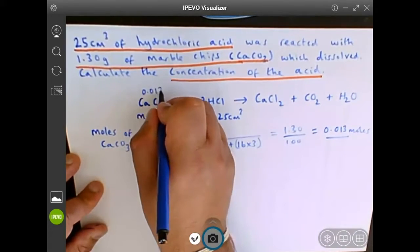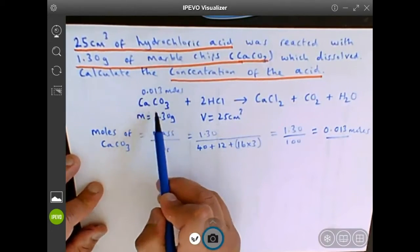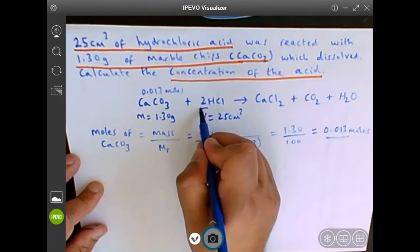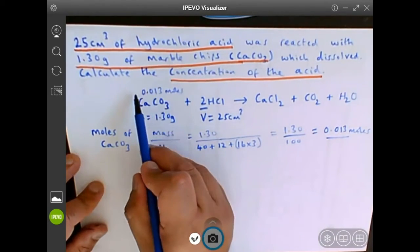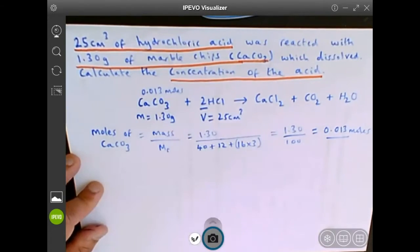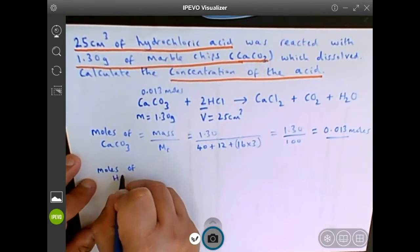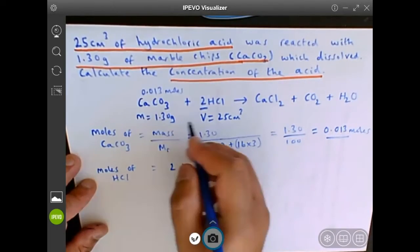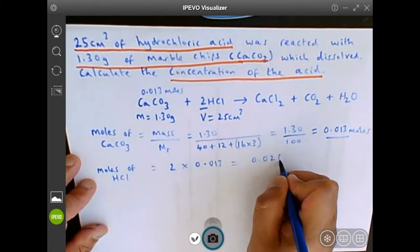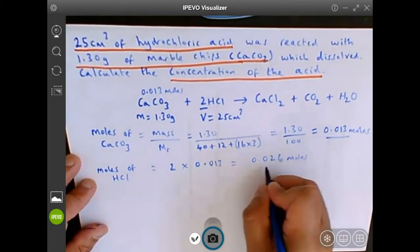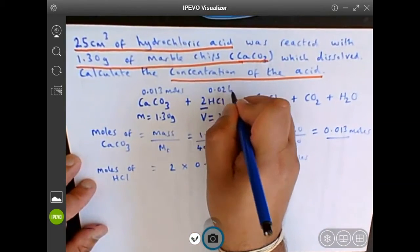From the equation you can see that one mole of calcium carbonate CaCO3 reacts with 2 moles of HCl. So I'll need twice as many moles to react completely with the HCl. The moles of HCl is twice the moles of calcium carbonate, so that's 2 times 0.013, which gives you 0.026 moles of HCl.